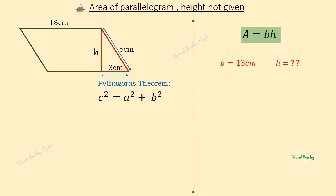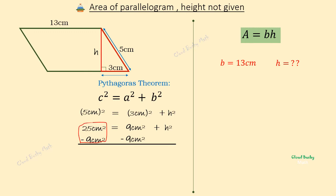That means we can use the Pythagoras theorem to find the height — let's call it h. The Pythagoras theorem tells us that the hypotenuse squared equals 3 centimeters squared plus h squared. So 5 squared is 25 square centimeters, which equals 3 times 3, that is 9 square centimeters, plus h squared. Let's subtract 9 square centimeters from both sides: 25 minus 9 equals 16 square centimeters.